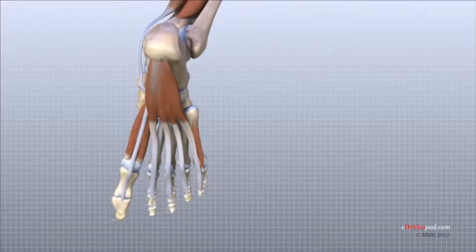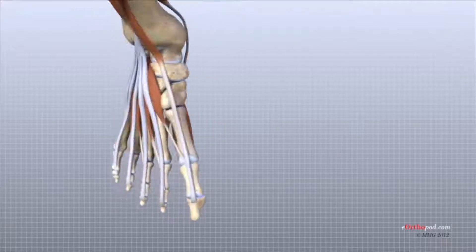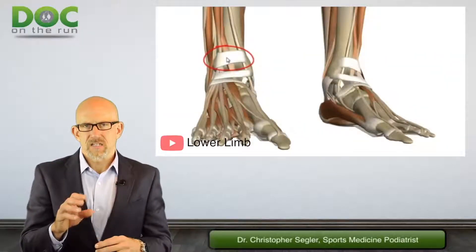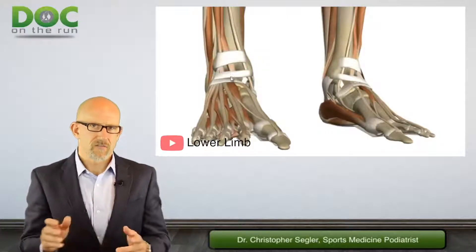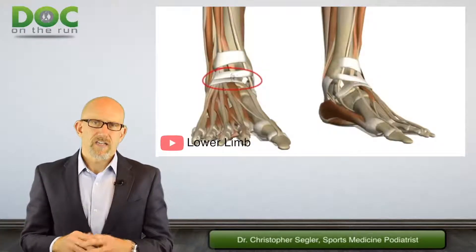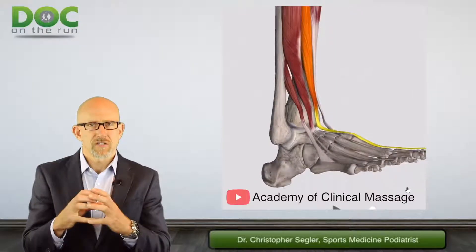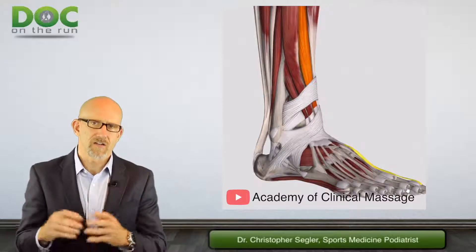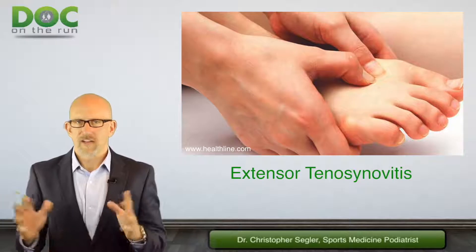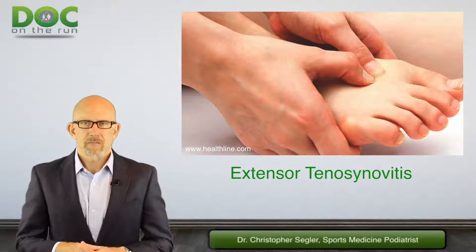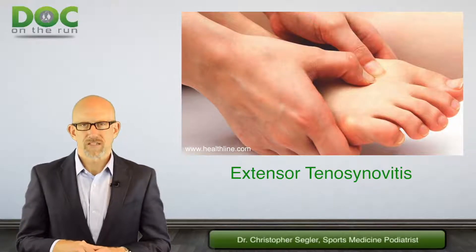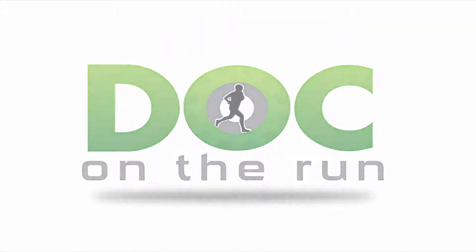So the word extensor means to extend. Tenosynovitis means inflammation — itis is inflammation. Teno is for the tendon, and synovitis is inflammation of the synovial tissue, the soft squishy tissue that lines the inside of the tendon sheath and makes the synovial fluid that allows the tendon to glide. So although it sounds really like some huge thing happened to you, it's not really that big of a deal. You just have some inflammation of the tendon sheath that surrounds the tendons on the top of your foot — the extensor tendons. Doc on the Run. We help injured runners run.